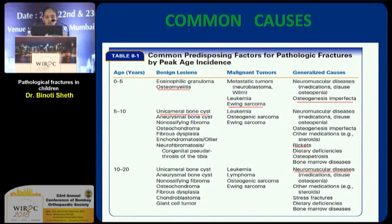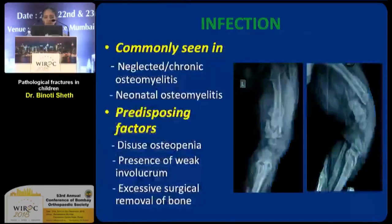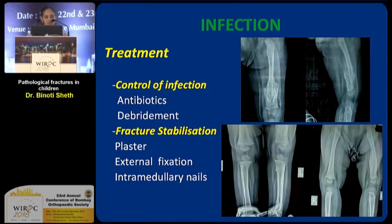A common cause in younger children is infection, commonly seen in neglected or chronic osteomyelitis and very commonly even in neonatal osteomyelitis. The predisposing factors are basically underlying disuse osteopenia, presence of weak involucrum, and sometimes excessive surgical removal of bone during debridement. The crux of treatment is to control the infection with appropriate antibiotics and debridement, and once the infection is controlled, fracture stabilization is very easy.